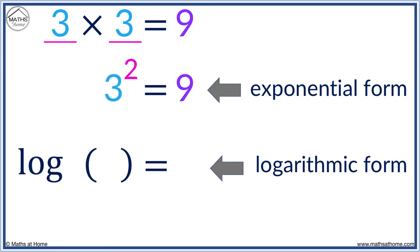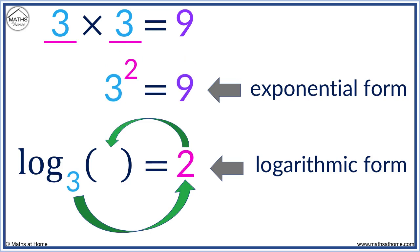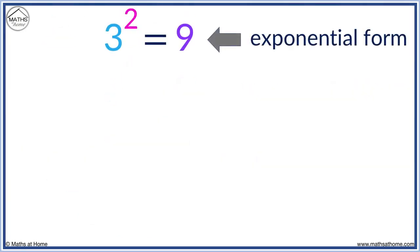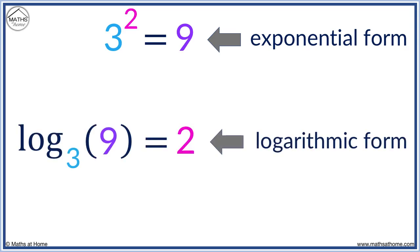The 3 goes here, the power of 2 goes here as our answer to the logarithm, and the 9 goes here. 3 squared equals 9, when written as a logarithm, is written in this spiral order as log base 3 of 9 equals 2. This is exponential form; this is logarithmic form.